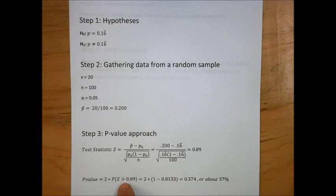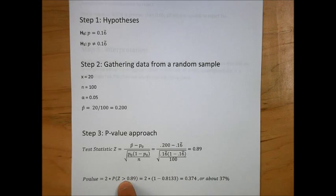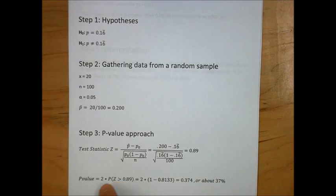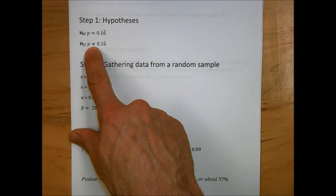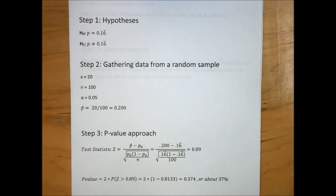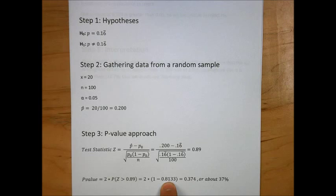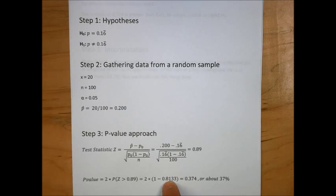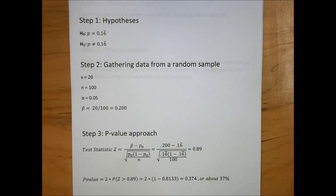To calculate the p-value in this case, not only are we looking for the probability that Z is greater than .89, we're actually looking for twice that probability, since the test was a two-sided test. We find that probability in our z-table, using methods from an earlier statistics class. We double it, and we get about .374, or 37%. This is our p-value.